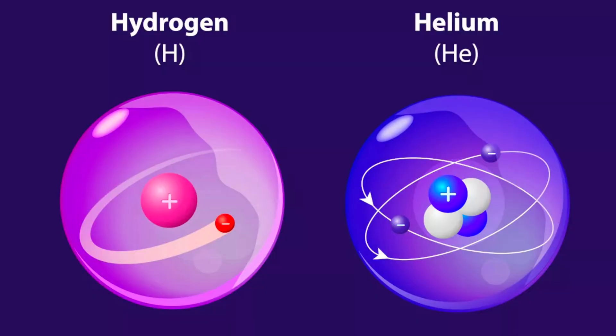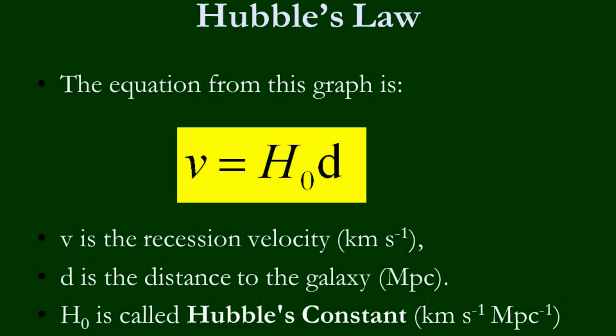The Big Bang Theory also explains the observed abundance of light elements in the universe, such as hydrogen and helium, which were created in the first few minutes after the initial expansion. It also predicts the expansion rate of the universe, known as the Hubble Constant, which has been confirmed through observations of distant galaxies.